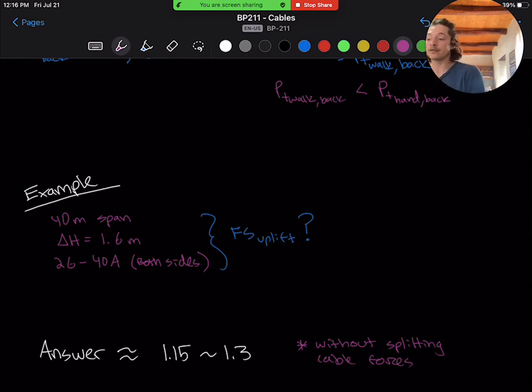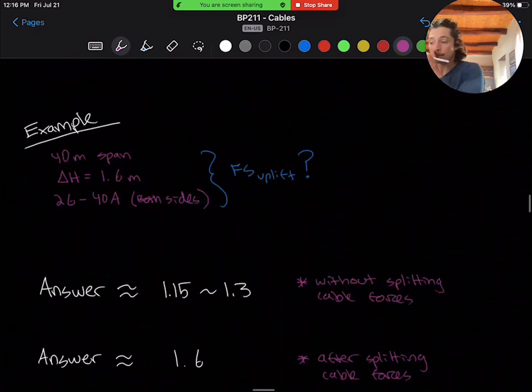Now, in the same problem as above, with only splitting the cables, I get a factor of safety of 1.6 on the high side anchor uplift calculation. Now, this is much higher and is a passing value, and we'll refer to this as sharpening the pencil on our calculations.